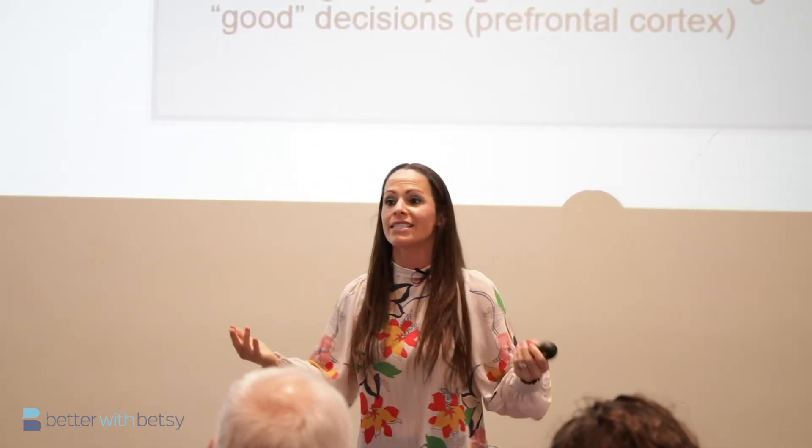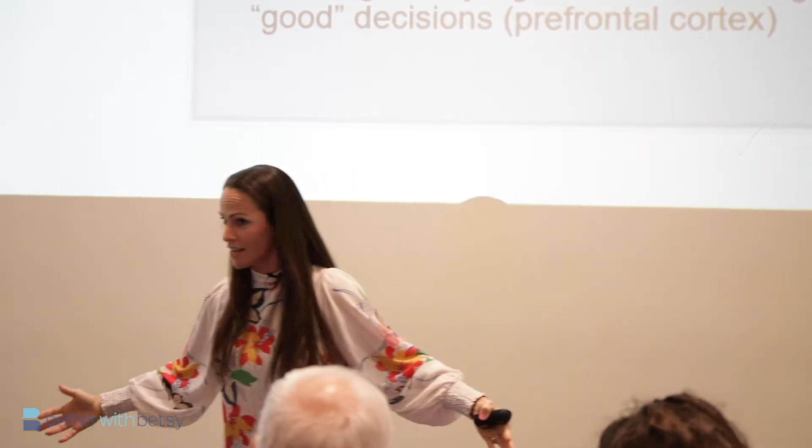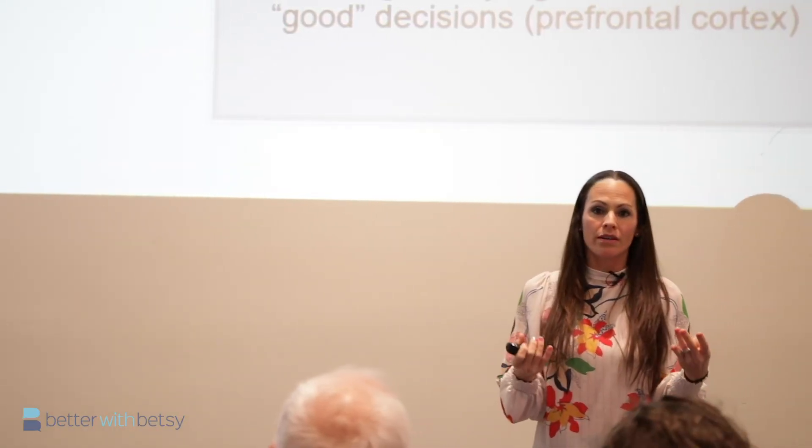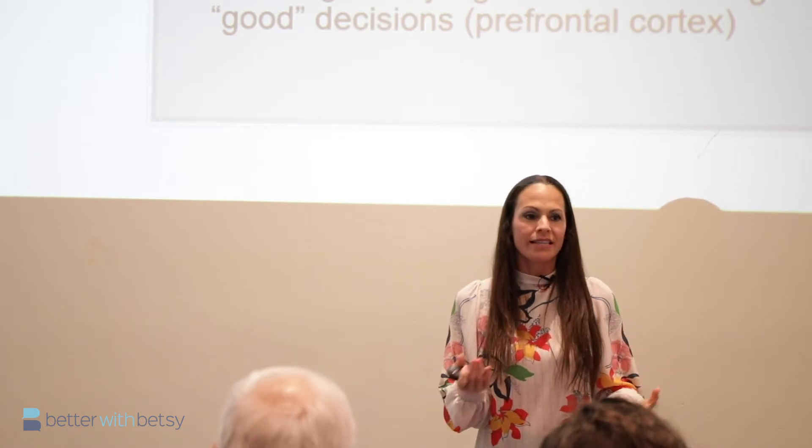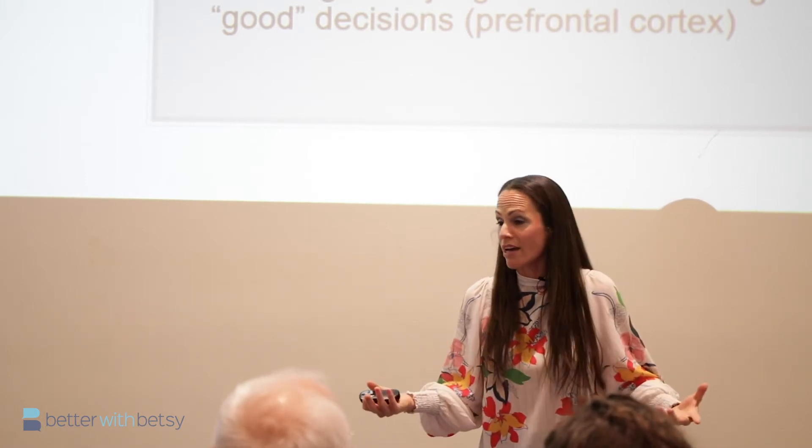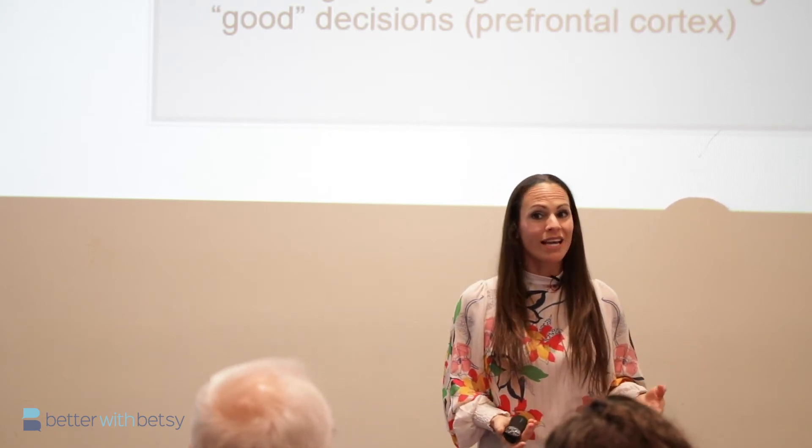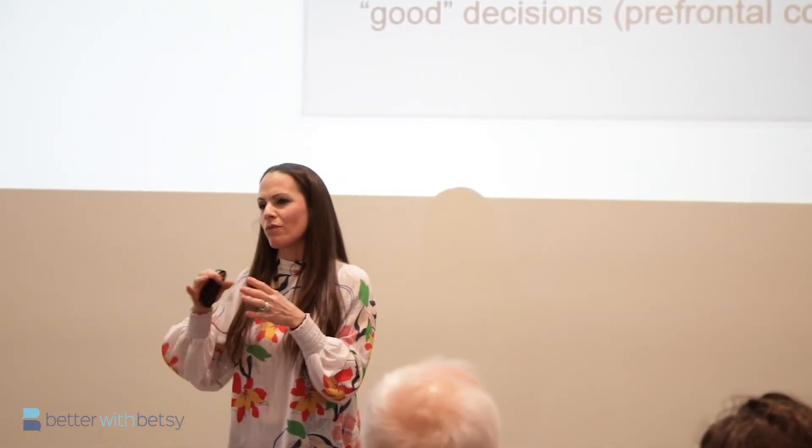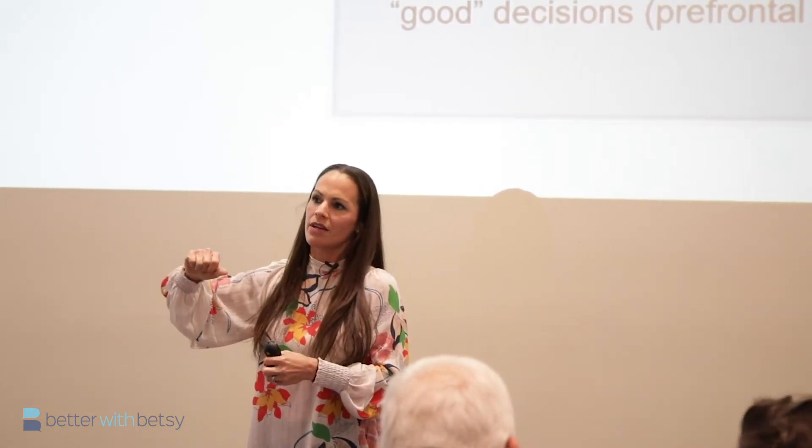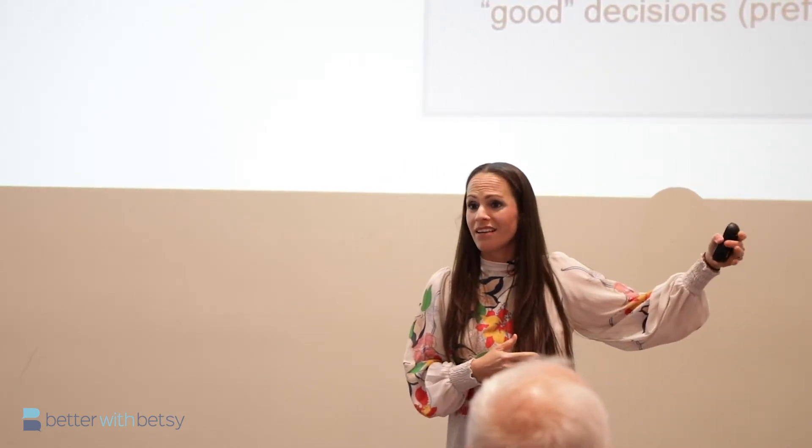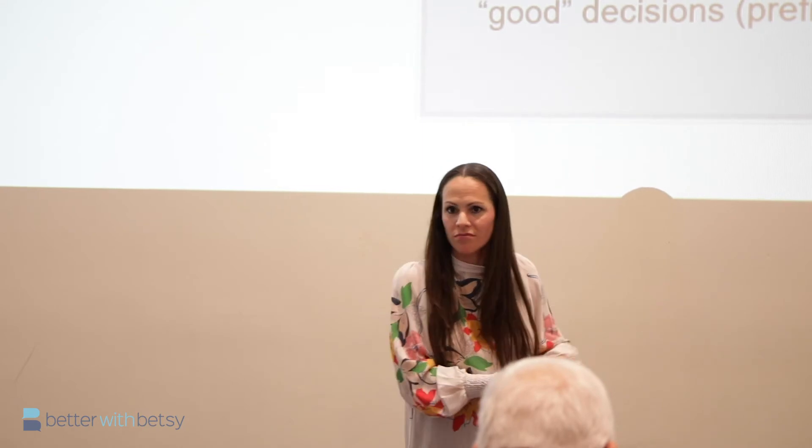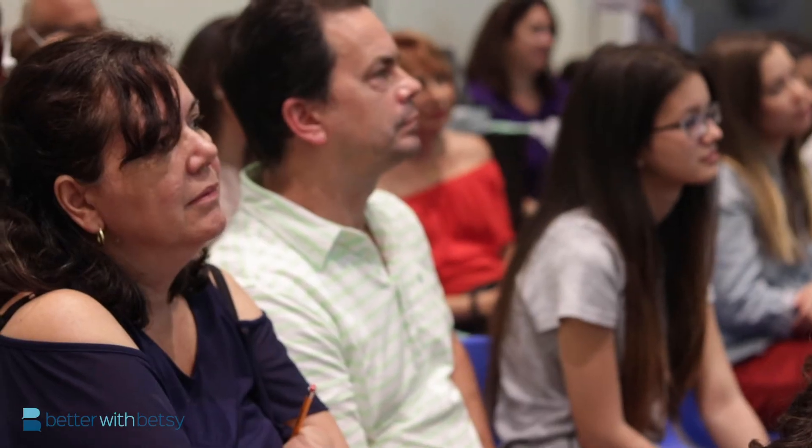So what the brain does to not explode is it automates things. It creates ways that then become very familiar and you can do without thinking. So much so that there's research that shows that people that have had their basal ganglia, which is where the habits reside, people that have had issues with that, they can still do things that they don't remember or they have no idea that they're happening because it's a habit.